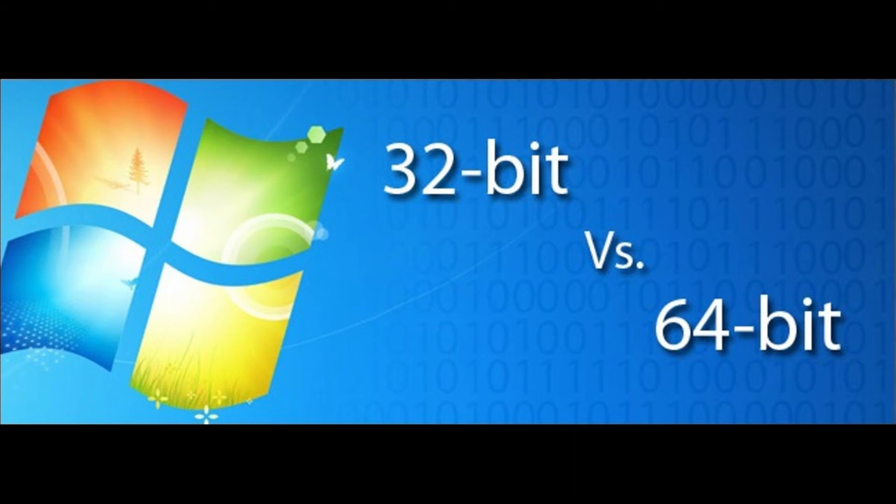Finally हमारे पास एक इंतहाई strong window — Windows 7 — आई। Windows 7 के अंदर भी same processor की बात थी: Windows 7 32-bit भी आई और 64-bit भी आई, और ये दोनों चीज़ें वहाँ आकर define होना शुरू हो गईं।